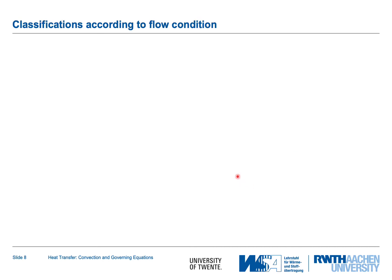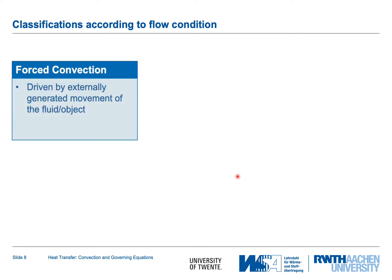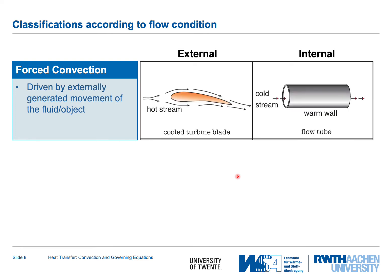How do we classify problems by flow condition? The first type is forced convection, where the flow is externally driven by motion of the fluid or the object. There are two sub-cases: external flow — flow around an object such as a turbine blade in a hot stream — and internal flow, such as a cold stream entering a pipe and exiting at higher temperature. In both cases the flow is driven by external means, such as a pump.